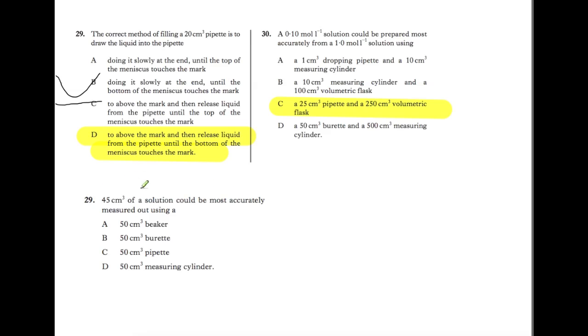You need to measure 45 cm³ of a solution. It would not be possible to do this with a beaker as the scale on the side is not accurate enough. You could use a burette. You would not be able to use a pipette as it only measures one particular volume. So you wouldn't know where the 45 was.